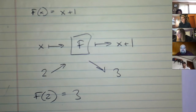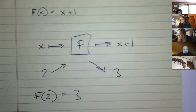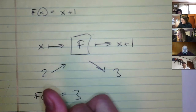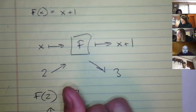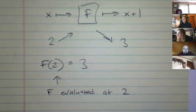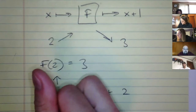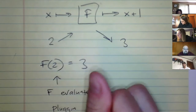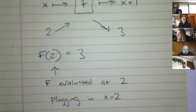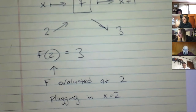Does that make sense? Yeah, I get it now. I just think it was the wording I wasn't getting at first. That's okay — a lot of what this is is just notation to get around. Any other questions about function notation? This is called evaluating. So you can say f evaluated at 2, or plugging in x equals 2. There are a lot of ways you can say it.